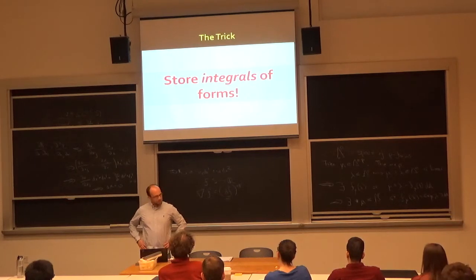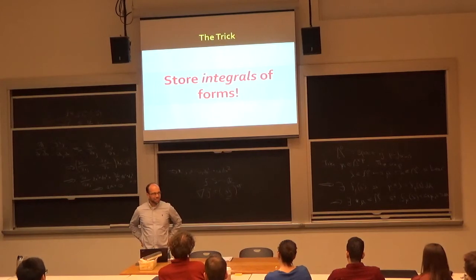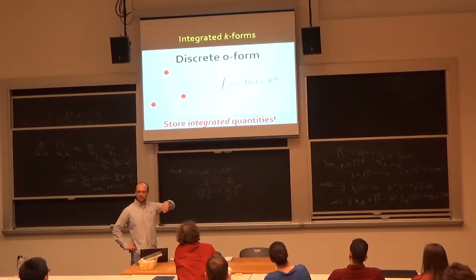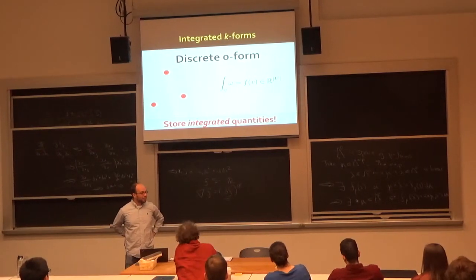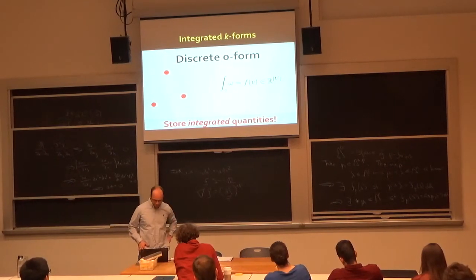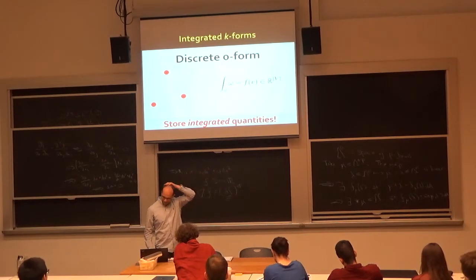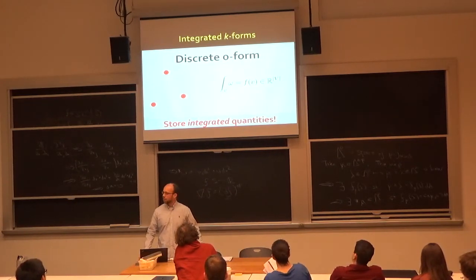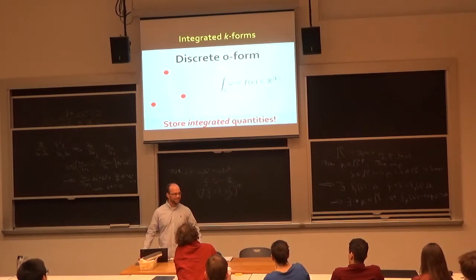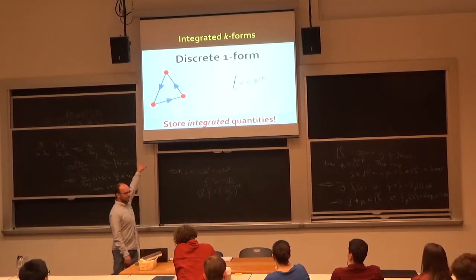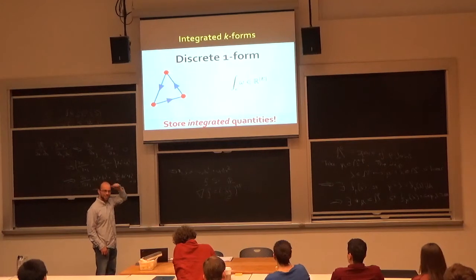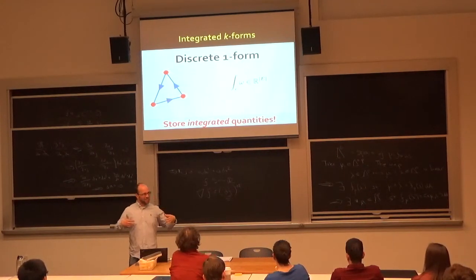We store zero-forms on vertices: the integral of a zero-form over a zero-dimensional vertex is just its value. A function on a surface is one number per vertex — the same as we've always thought. A discrete one-form is stored on edges: for each edge, we store the integral of the one-form over that edge. Whereas the one-form is a crazy operator, its integral over an edge is just a number. We know how to integrate over curves. Discrete two-forms are stored on triangles — one number per triangle.